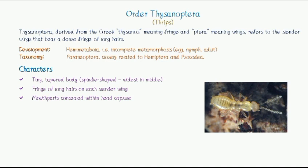In their taxonomy, they belong to the superorder Paraneoptera. Paraneoptera includes Thysanoptera, Psocoptera (lice/book lice), and Hemiptera. They are closely related to Hemiptera, and Psocoptera includes bark lice and book lice.